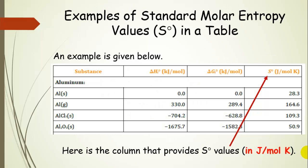So here's an example table. Previously, we saw delta HFs, heats of formation, enthalpies of formation. And now we're going to learn about these standard molar entropies. Notice the units are different. Delta H is in kilojoules per mole, but the standard molar entropy is in joules per mole Kelvin.